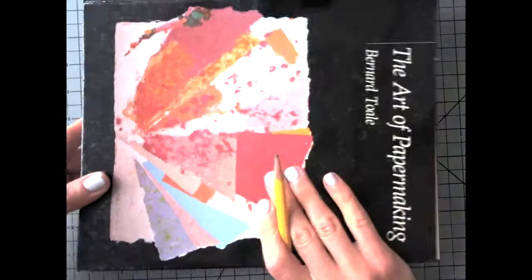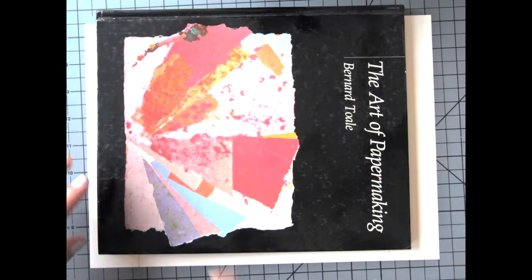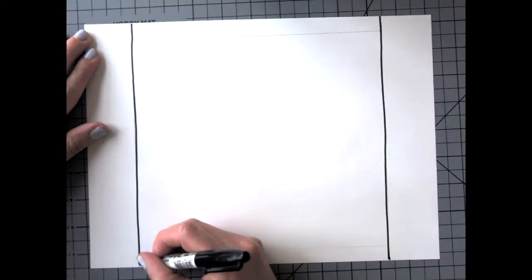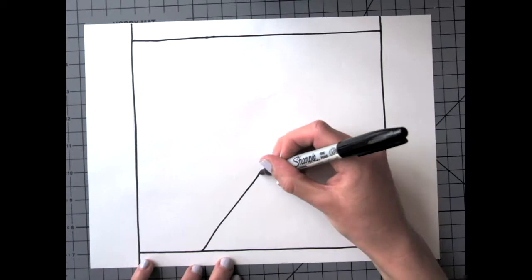I started off by creating a border and then taking a sharpie and going over my lines so that they're nice and dark. Martín Ramírez uses a lot of bold line. If you don't have a sharpie, you can use any kind of dark marker or pen.